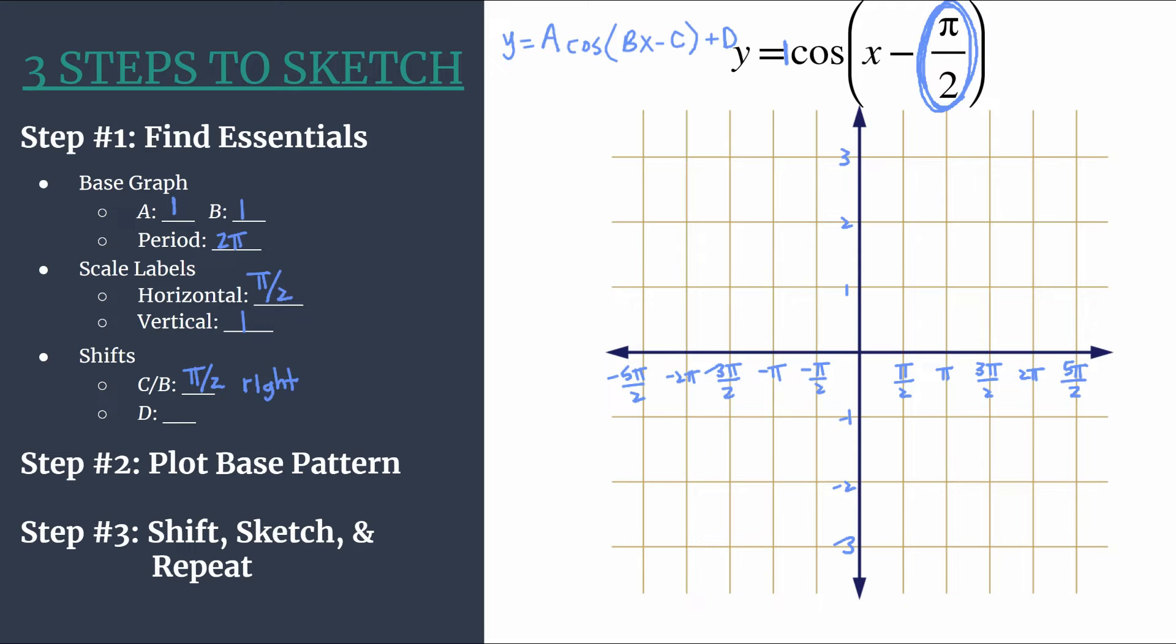And you see that there's an understood plus zero for d. We don't have a vertical shift here, so we aren't going to have to move in that manner. So we've done all this analysis. We're ready to move into step two.